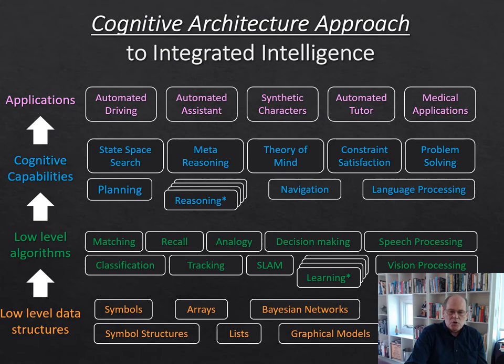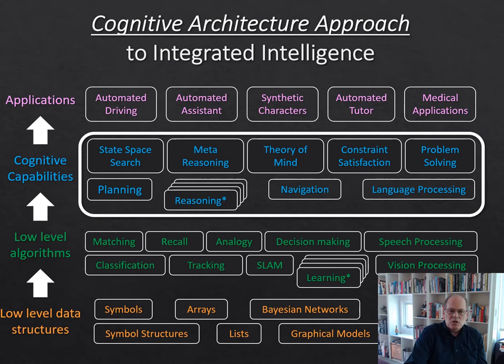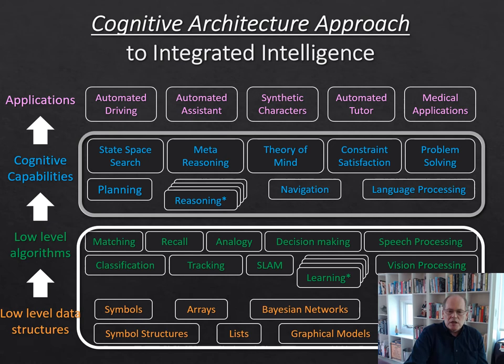Now another approach, which is also popular in some of the robotics work, is to start with the cognitive capabilities and create separate independent systems that do these different kinds of things. So you might have a planner, you might have a natural language system, you might have a meta reasoning system. Our view is that the way to look at it is at this lower level, and that each of these is maybe implemented within something that's going on at the lower level. That's our approach.